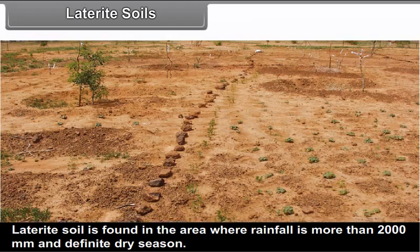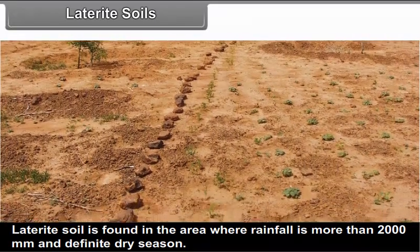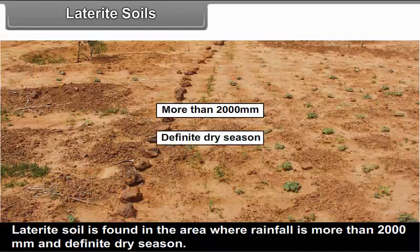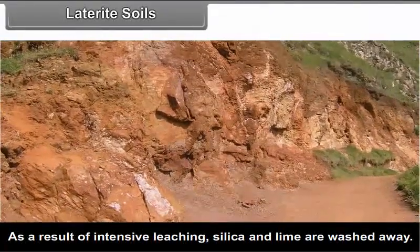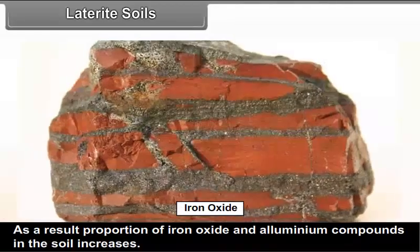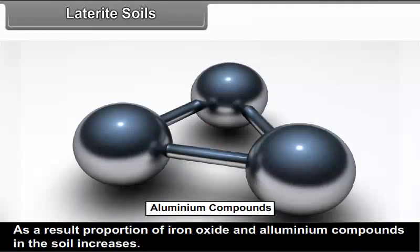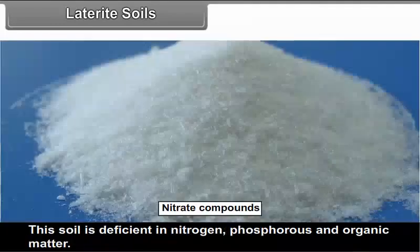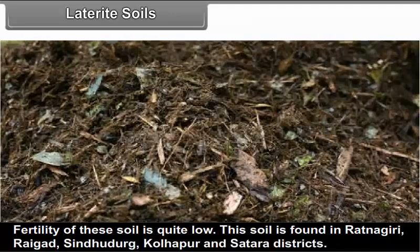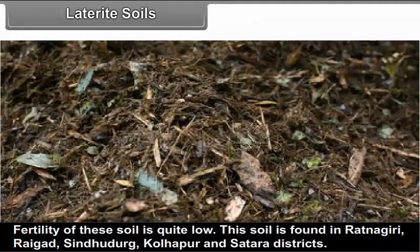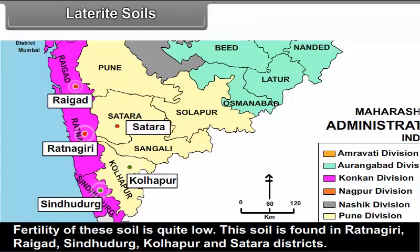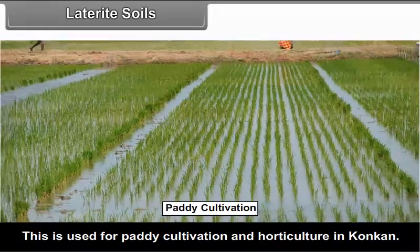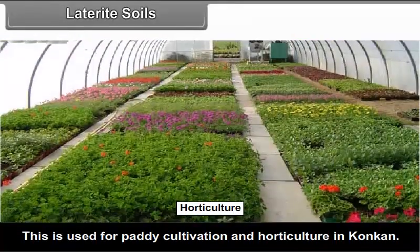Laterite soils: Laterite soil is found in areas where rainfall is more than 2000 mm with a definite dry season. As a result of intensive leaching, silica and lime are washed away, and the proportion of iron oxide and aluminum compounds in the soil increases. This soil is deficient in nitrogen, phosphorus and organic matter, and fertility is quite low. This soil is found in Ratnagiri, Raigad, Sindhudurg, Kolhapur and Satara districts. This soil is used for paddy cultivation and horticulture in Konkan.